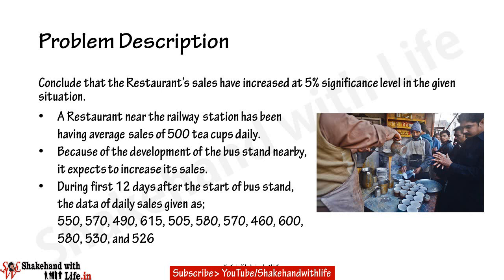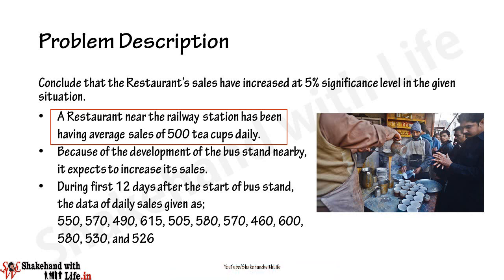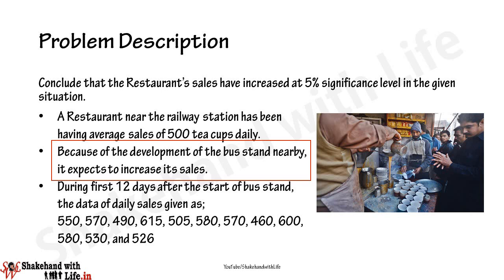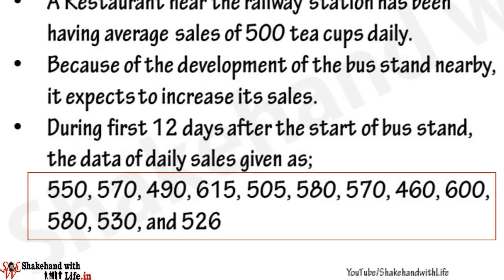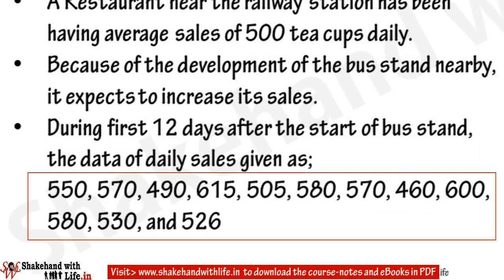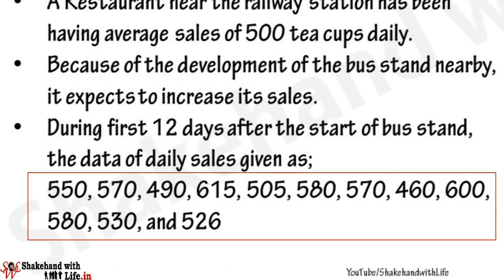To better understand the application of the T-test, we take a practical problem. A restaurant near a railway station has been having average sales of 500 tea cups daily. Because of the development of a bus stand nearby, it expects sales to increase. The data of daily sales for the first 12 days after the start of the bus stand is given as: 550, 570, 490, 615, 505, 580, 570, 460, 600, 580, 530, and 526.